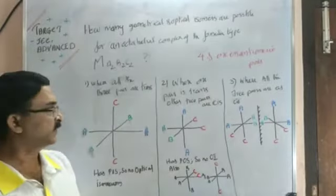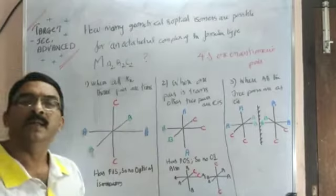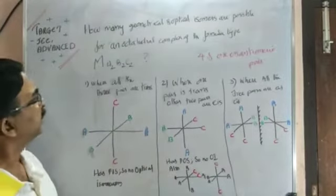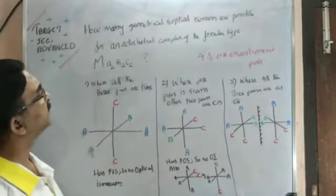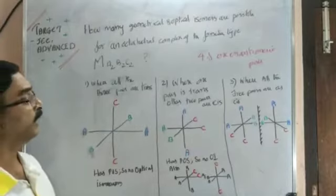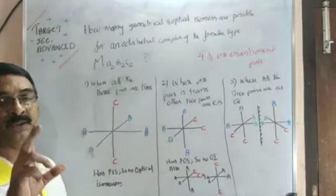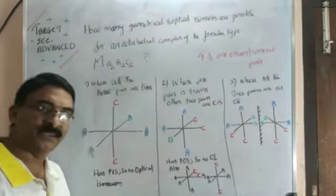Dear students, the next question is regarding isomers again. The question is how many geometrical and optical isomers are possible for an octahedral complex of the formula type MA2B2C2? There are three sets of two identical ligands each.